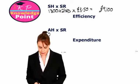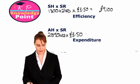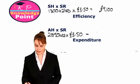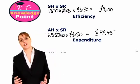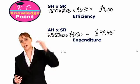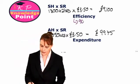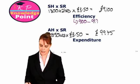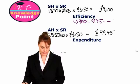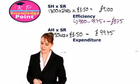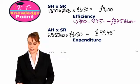Looking at our actual hours valued at the standard rate: 2,850 hours multiplied by £3.50 gives us £9,975. To calculate our efficiency variance, it's just the top figure minus the bottom figure: £9,100 minus £9,975, which gives us a negative figure of £875. So our efficiency variance is minus £875, adverse.